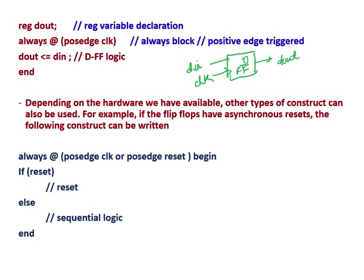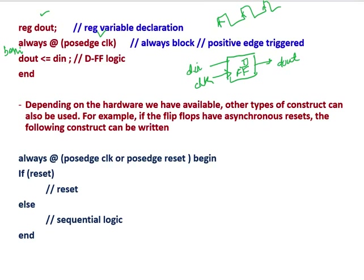Here is an example. I have declared d_out as reg. Then the always block at posedge clock: d_out = d_in. Whenever we encounter a positive edge of clock, this d_in is propagated to d_out — the input is propagated to the output side. This is nothing but the logic of a D flip-flop. Prior to the positive edge of clock, whatever input we had, that input will be transferred to the output side.